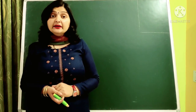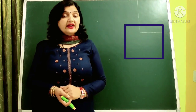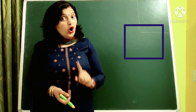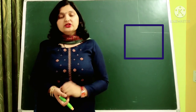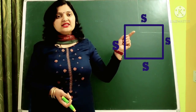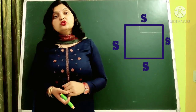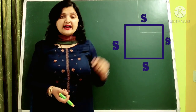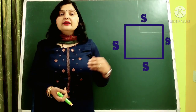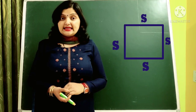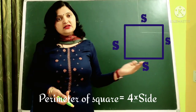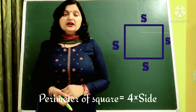Next, perimeter of a square. A square is a figure having 4 sides, all 4 corner angles are 90 degrees, and all 4 sides are equal in length. If one side is S, we add S four times: S plus S plus S plus S equals 4S. So the formula for the perimeter of a square is 4 times the side.